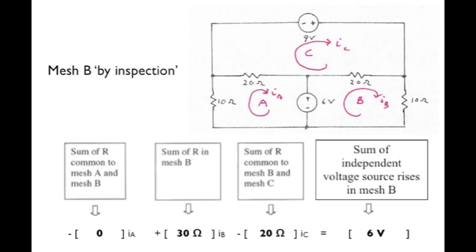For mesh B, we have a similar algorithm. What goes in front of the I sub B term is the sum of resistance in mesh B. What goes in front of the other mesh currents is the sum of shared resistance between mesh B and the mesh in question with a minus sign. So we have 0 times IA plus 30 times IB minus 20 times IC. And the sum of independent voltage rises in mesh B on the other side of the equation is plus 6 volts.